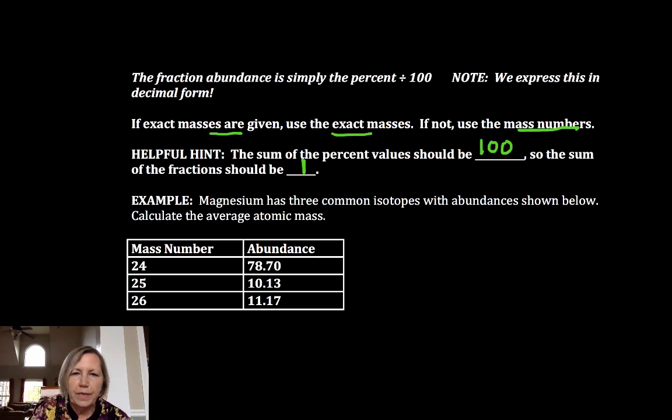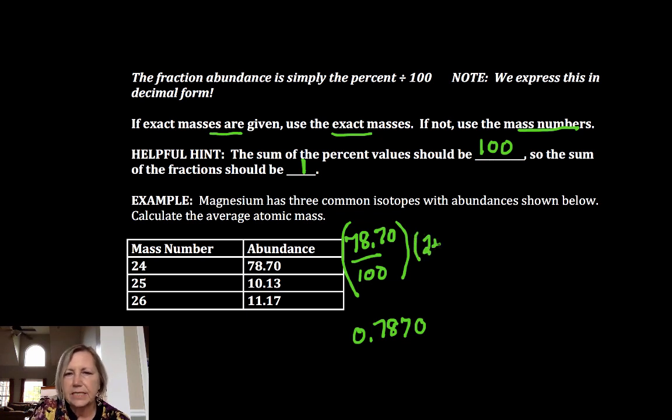So I'm going to take, I say, fraction mass plus fraction mass, fraction mass plus fraction mass. It's almost kind of sing-songy. So I'm going to do the fractional abundance. So it's 78.70 divided by 100. I'm going to be a little explicit here. You might simplify that as 0.7870 times its mass number.